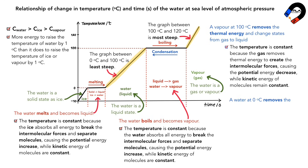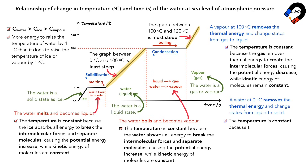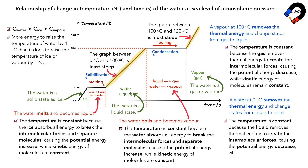When water at 0 Celsius removes thermal energy and changes state from liquid to solid, this is called solidification or freezing. At solidification, the temperature is constant because the water removes thermal energy to create intermolecular forces, causing the potential energy to decrease while the kinetic energy of molecules remains constant.